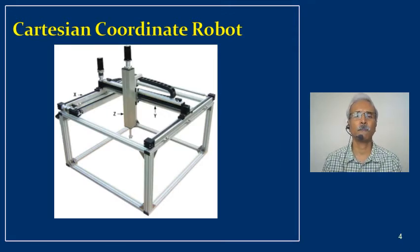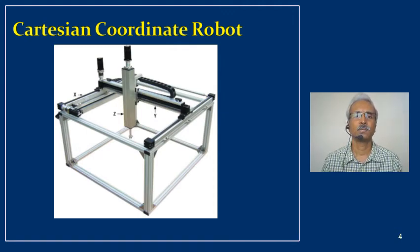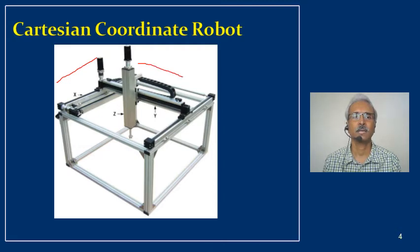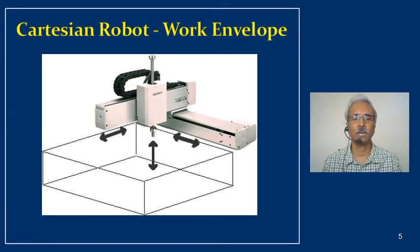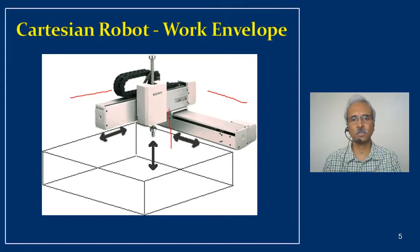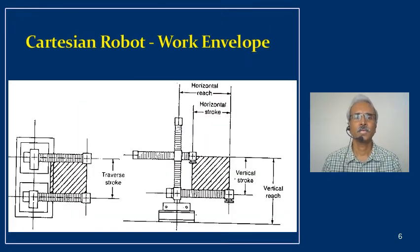One commercial example resembles an overhead crane or a gantry-type robot, where frames support X, Y, and Z axes. Another example from Sony also shows three mutually perpendicular axes with sliding joints. From this diagram, you can also see that the work volume is rectangular in shape.